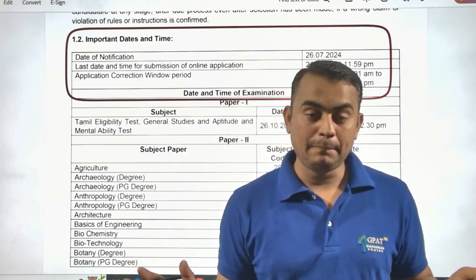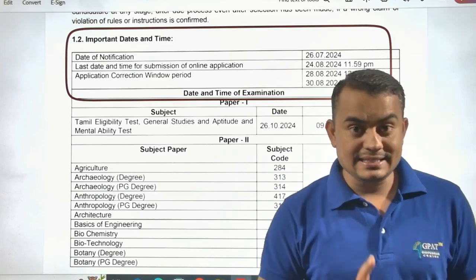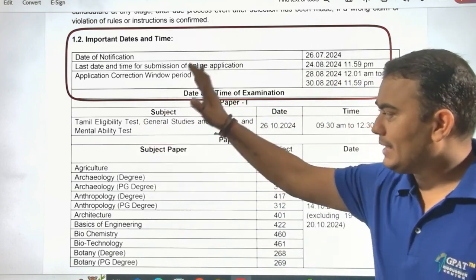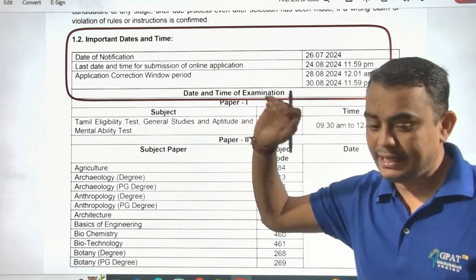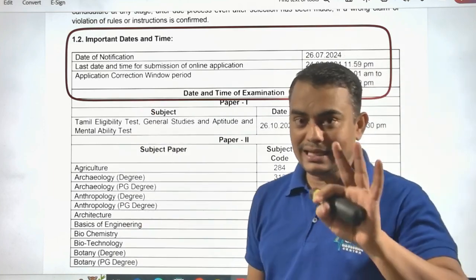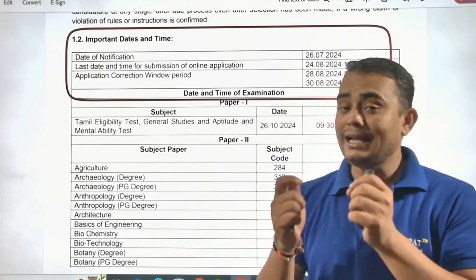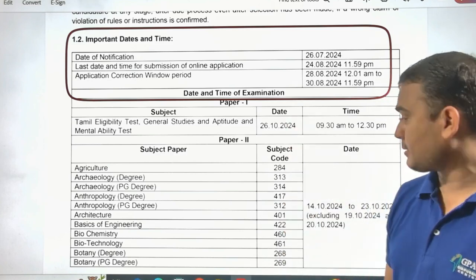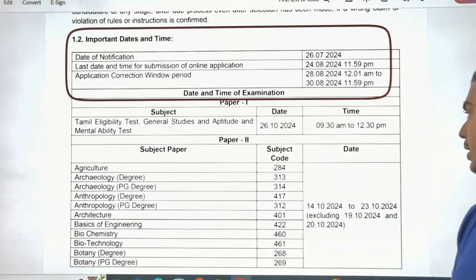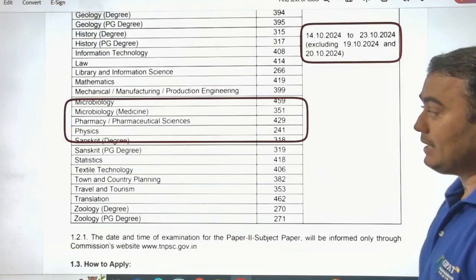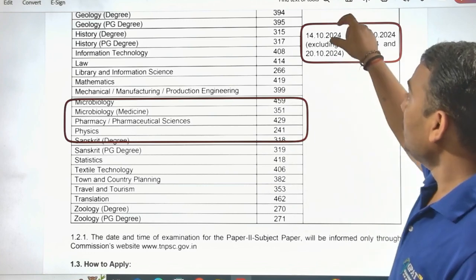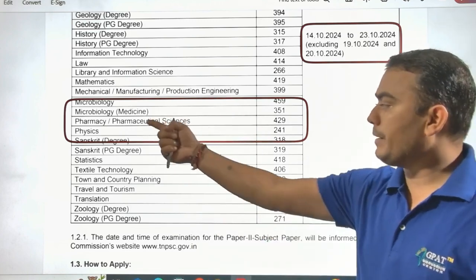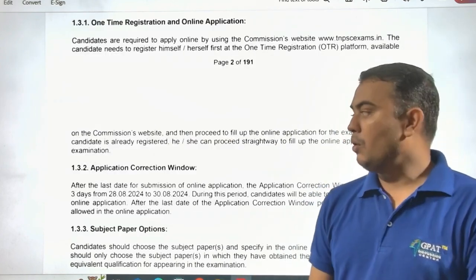There are two papers: the first paper is related to an eligibility test, and the second paper is related to your subject knowledge. Paper 1 covers the Tamil Eligibility Test and General Studies, Aptitude and Mental Ability Test. The date of this examination is 26th August, from 9:30 AM to 12:30 PM. The pharmacy subject paper will be scheduled between 14th August and 23rd August — that date will be notified later.